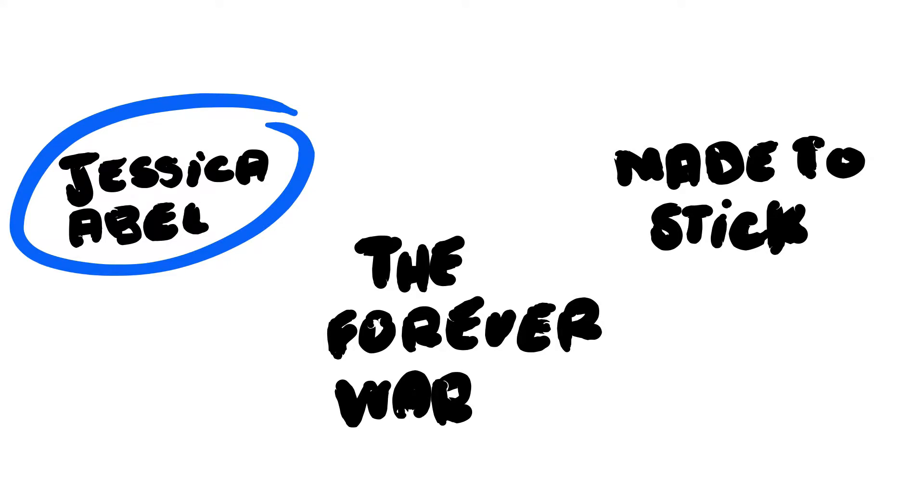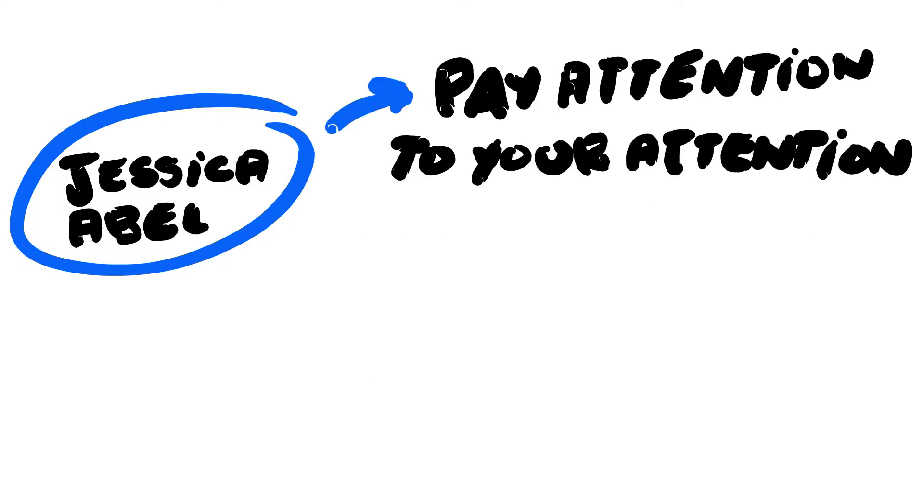Jessica Abel talks about, in that episode, actually I listened to that episode and then I went back to the first episode of her own podcast, which is Out on the Wire, and there's this topic of paying attention to your attention. This is when you're learning something and you're trying to write new stories. It's important to pay attention to your attention, meaning create things that amuse yourself, what gets your attention, and then trying to make something that would get your attention if you were a third party.